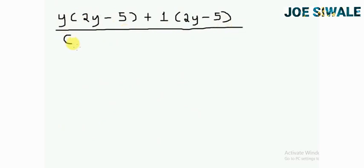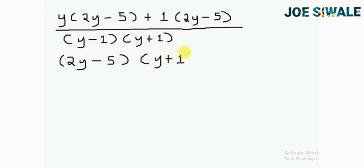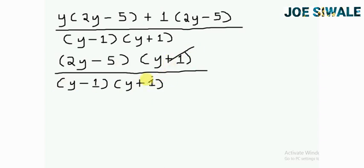I can put my brackets in that way. Then I can say that y is common, so that is going to be y times 2y minus 5 plus 1 is common, then I'm going to have 2y minus 5 divided by y minus 1 and y plus 1. I can cancel out y plus 1 on the denominator and on the numerator. So I'm going to remain with 2y minus 5 divided by y minus 1.